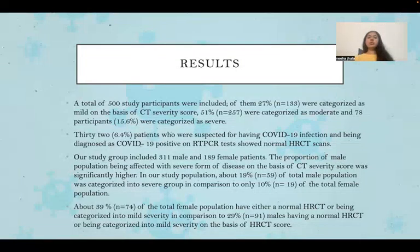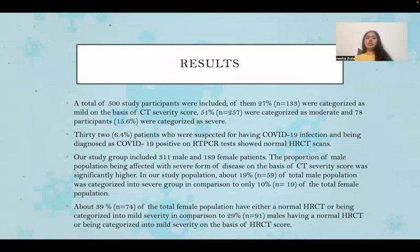The study group included 311 males and 189 females. The proportion of males showing severe disease was more in comparison to females. About 39% of the total female population had either a normal HRCT or were categorized into mild severity, compared to only 29% of males having a normal HRCT or being categorized into mild severity based on HRCT score.